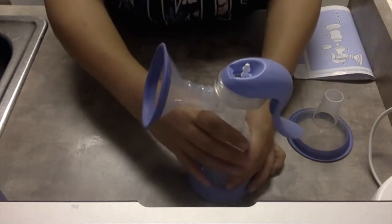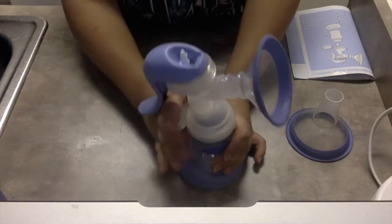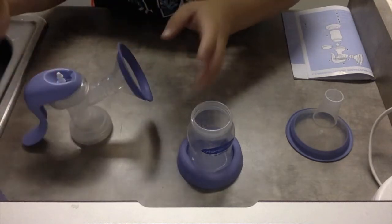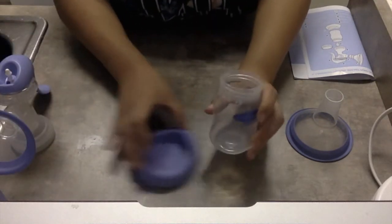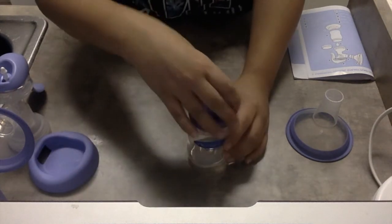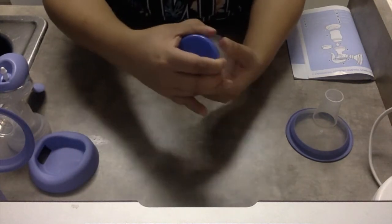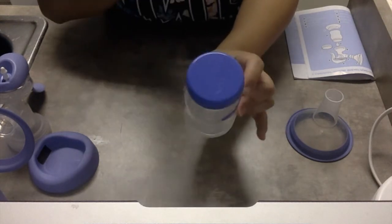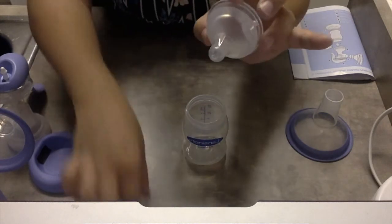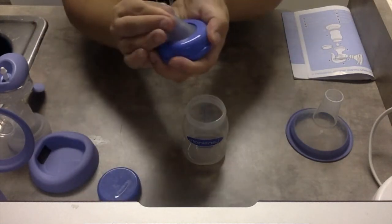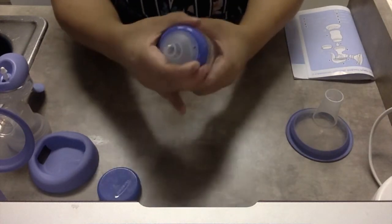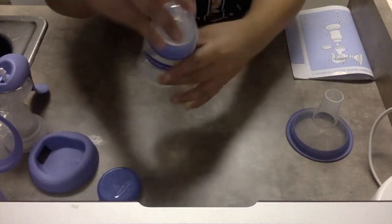And then once you're done, you unscrew the big part. You want to set that aside somewhere. It is pretty big. You can take this out. And then if you want to just store it in the fridge for later or just in your diaper bag for later, it comes with a lid that just closes it all the way. Or it does come with a nipple and a collar and you can just put this in. This is like the Medela bottle if you're ready to feed your baby.